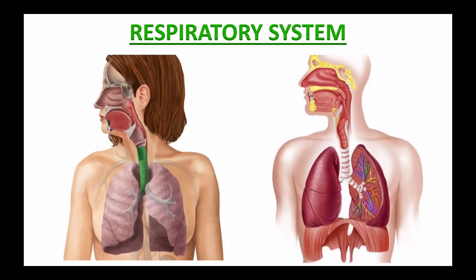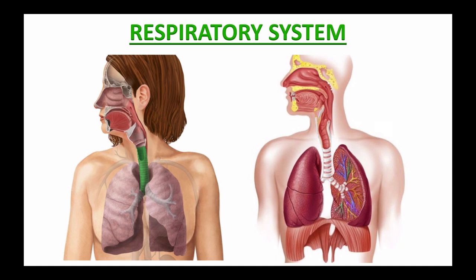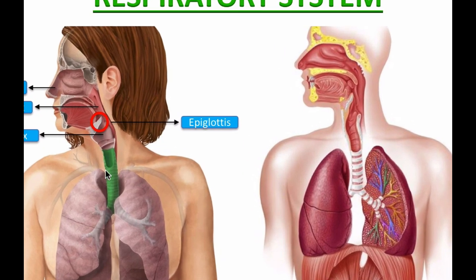The respiratory system has two main parts: the upper respiratory tract and the lower respiratory tract. The upper respiratory tract contains the nose, the pharynx or throat (which connects the nasal cavity and mouth), and the larynx or voice box. The larynx is comprised of a variety of cartilages, including the epiglottis. It stays open for airflow, but when swallowing, it covers the entrance of the larynx so food and liquid do not enter the windpipe or lungs.